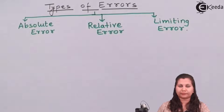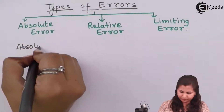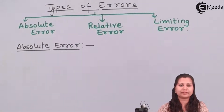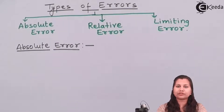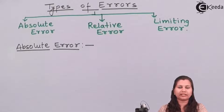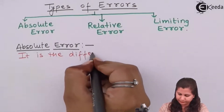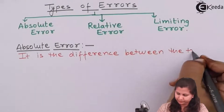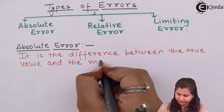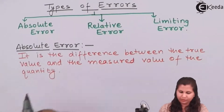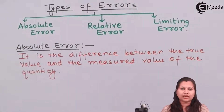First is the absolute error. The absolute error is defined as the difference between the true value of the quantity and the measured value of the quantity. So it is just the difference, or we can say it is the simple way in which we define the error. The absolute error is the amount of physical error present in the measurement.